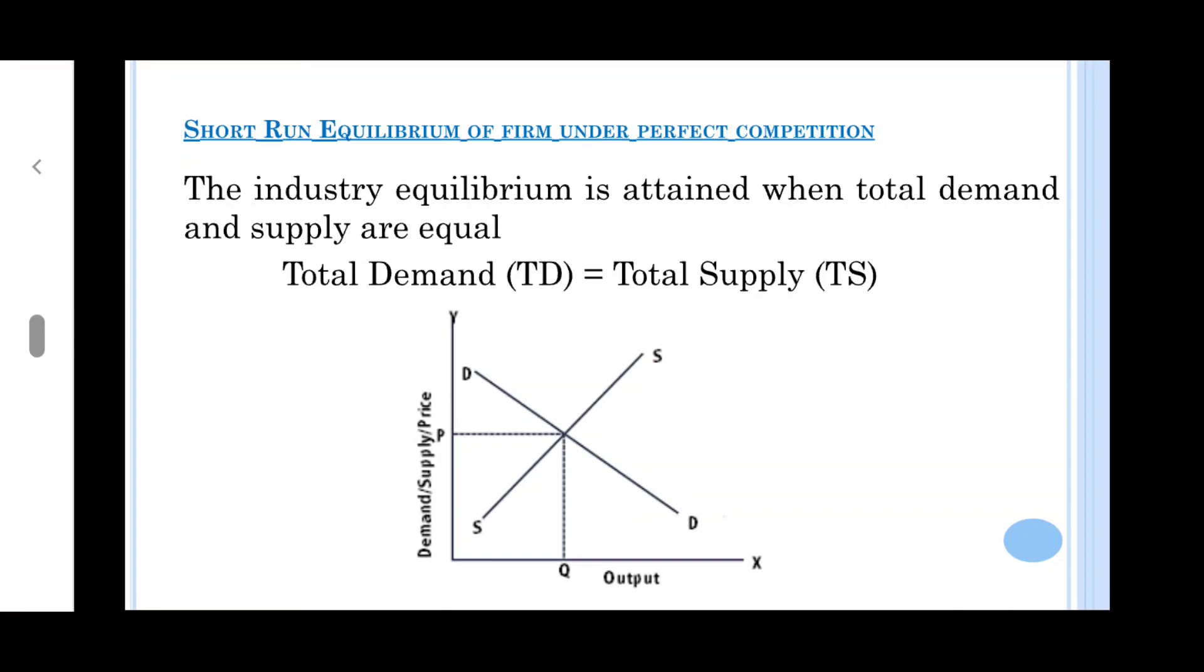Look at the figure. The x-axis shows output, y-axis shows demand, supply and price. DD is a demand curve, SS is a supply curve. Both are intersecting at point E, and this is the equilibrium point where price is OP. This OP price is fixed in the industry because demand and supply are equal.